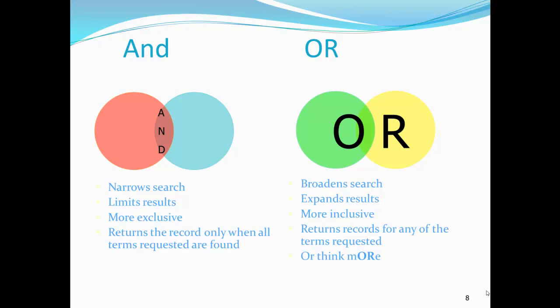In summary, let's review what we have learned about the Boolean operators used to combine searching terms. The AND operator narrows your search and limits the number of results returned to you. AND is exclusive — the search results show records only when all terms requested are found. The OR operator broadens your search and expands the number of results returned. OR is more inclusive; the search returns records when any term requested is found. You can also use NOT in your search to eliminate terms.